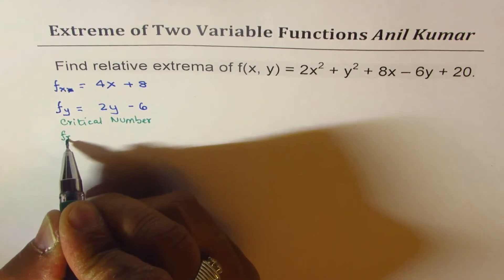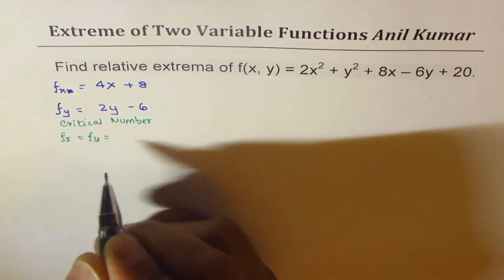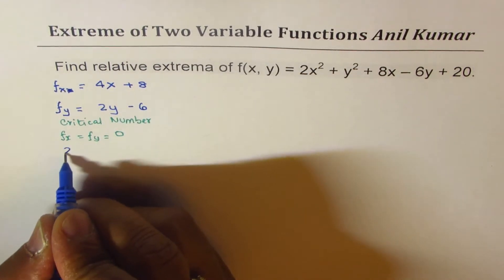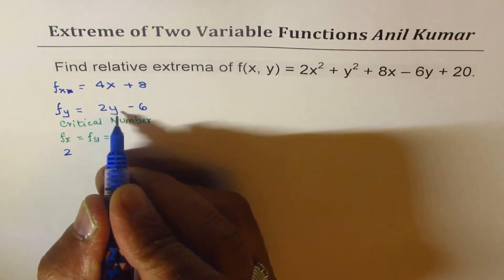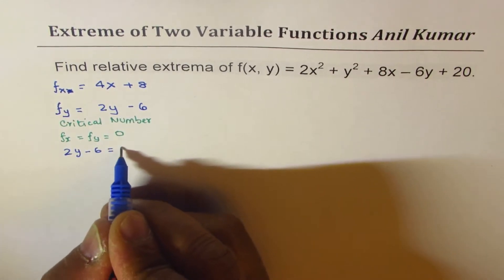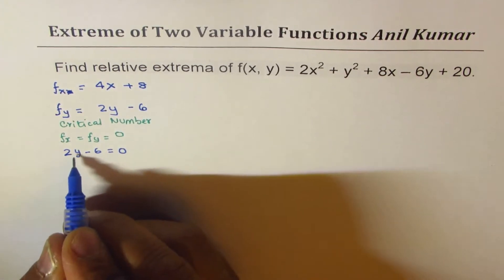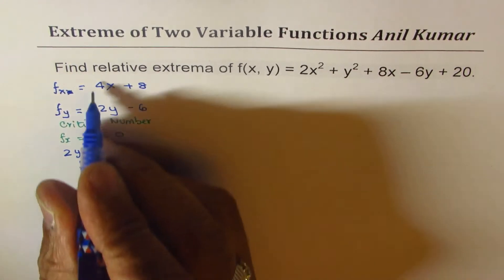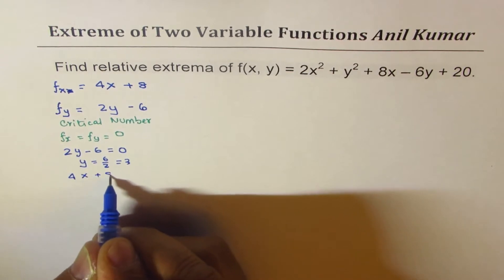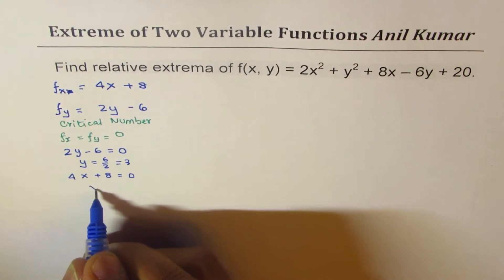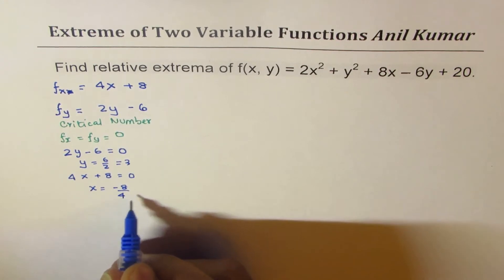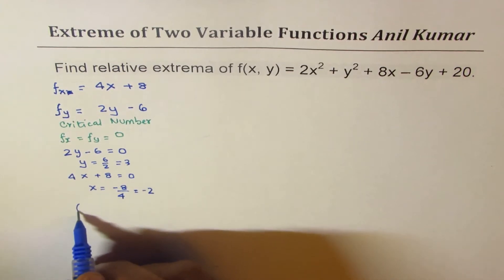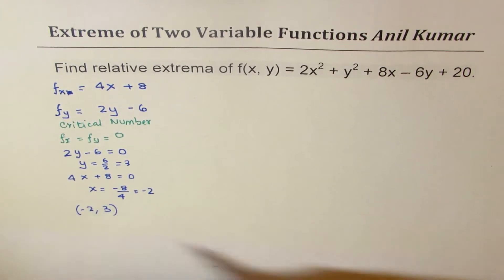For a critical value, both f_x and f_y should be equal to zero. So we equate these to zero. Setting 2y - 6 = 0 gives us y = 3. Setting 4x + 8 = 0 gives us x = -2. So the critical point is (-2, 3).